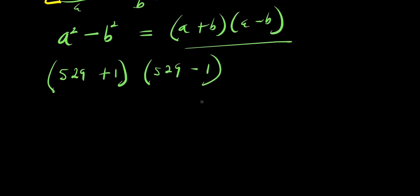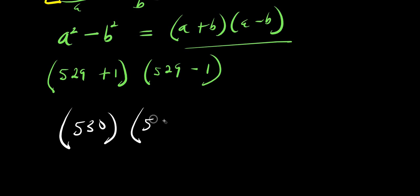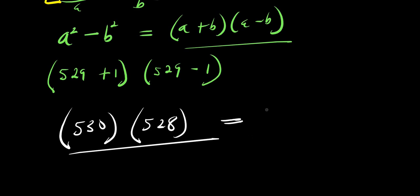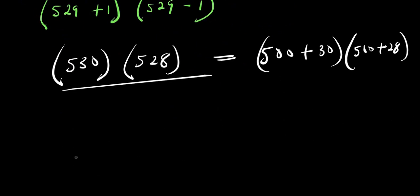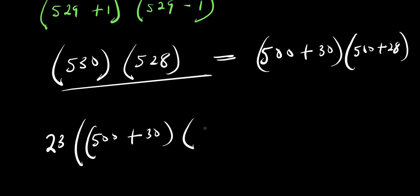So right now, 529 plus 1 is 530, and 529 minus 1 is 528. So we need to multiply 530 times 528. We can express this as 500 plus 30, times 500 plus 28.